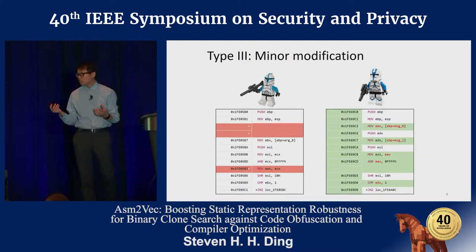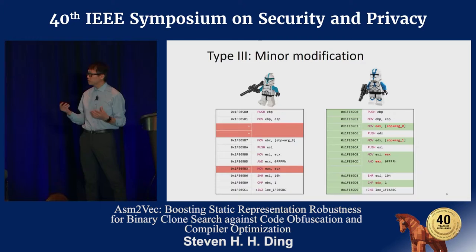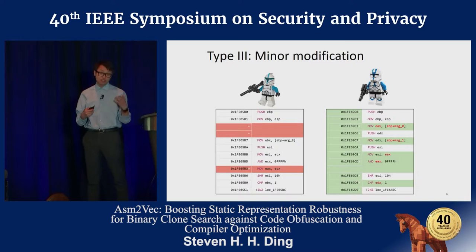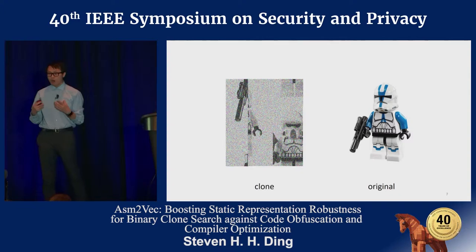The third type is minor modification clones, where we allow a certain degree of update or change to the assembly code. This can be handled through fuzzy hashing or locality-sensitive hashing algorithms for nearest-neighbor clone search. But what is more challenging is that we also have different obfuscation and optimization techniques that make the same assembly functions look completely different.